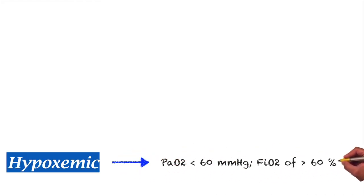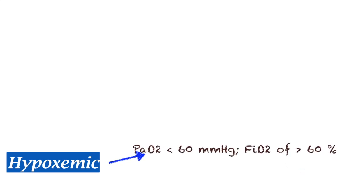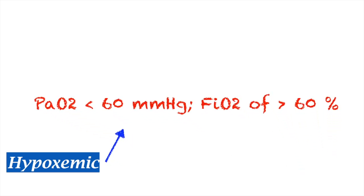Hypoxemic respiratory failure is defined as a partial pressure of oxygen, or PaO2, of less than 60 mmHg, despite giving the patient at least 60% fraction of inspired oxygen, or FiO2. Again: a PaO2 of less than 60 mmHg despite an FiO2 of at least 60%.